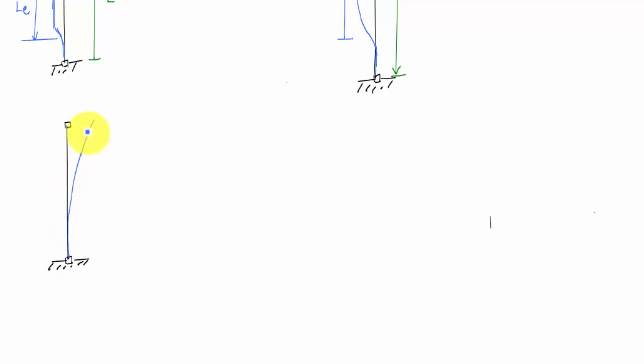And this entire buckled length would have to be continued. This is my effective length. And the relationship between the two, the effective length is 2 times L. And that would say for a cantilever column or a fixed and free column, this K value would be 2.0 in theory.